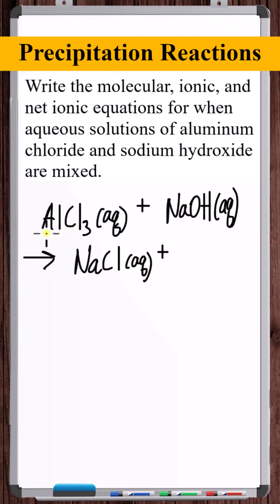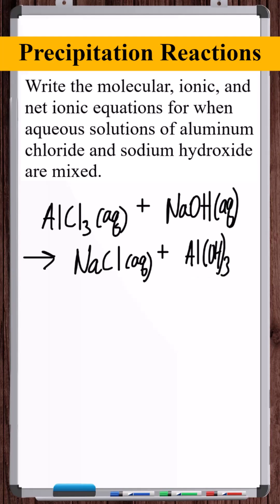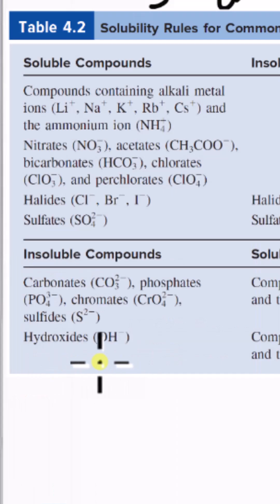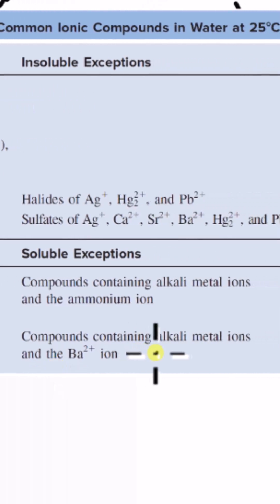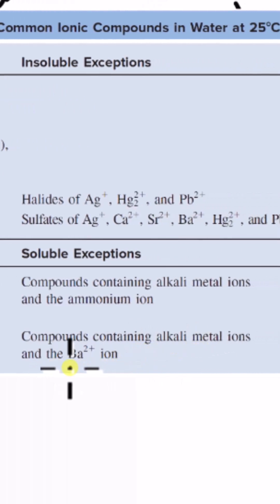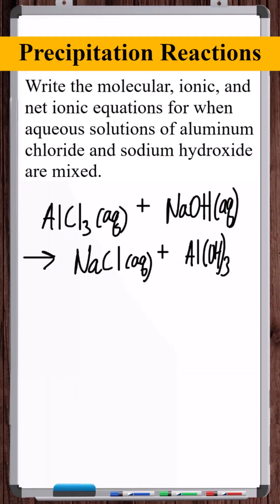What about Al³⁺ and OH⁻? Is aluminum hydroxide soluble? All hydroxides are insoluble, with exceptions only when the cation is an alkali metal ion or barium. Aluminum is not an exception, so aluminum hydroxide is insoluble — it's a precipitate.